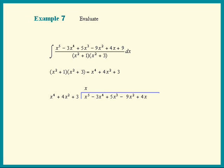Now take x and multiply it by the divisor. So we get x to the 5th plus 4x cubed plus 3x. Draw a line and now subtract.